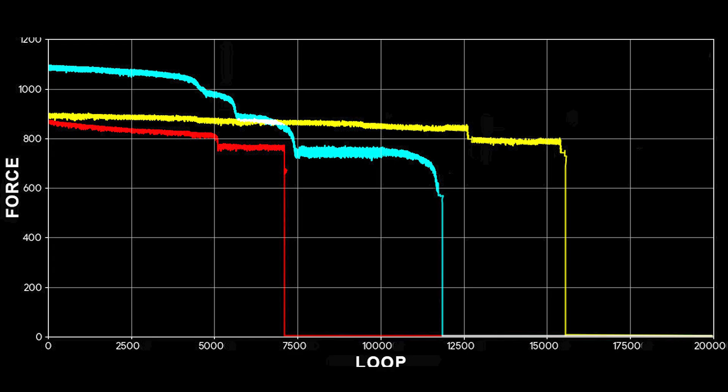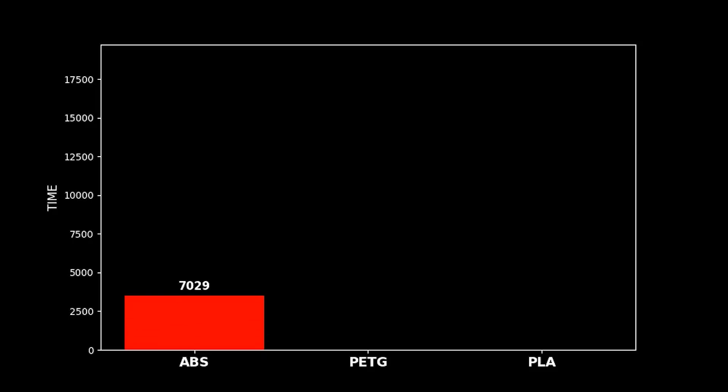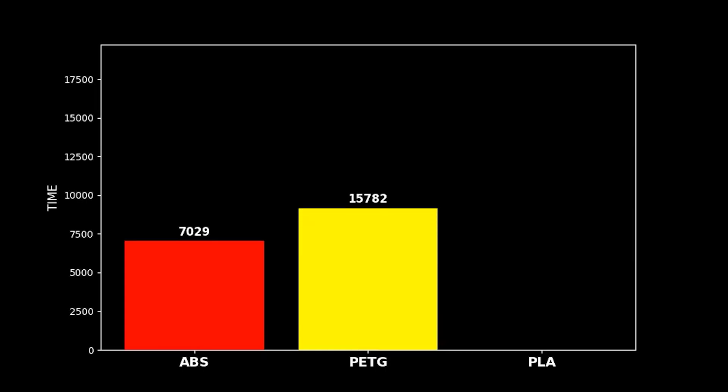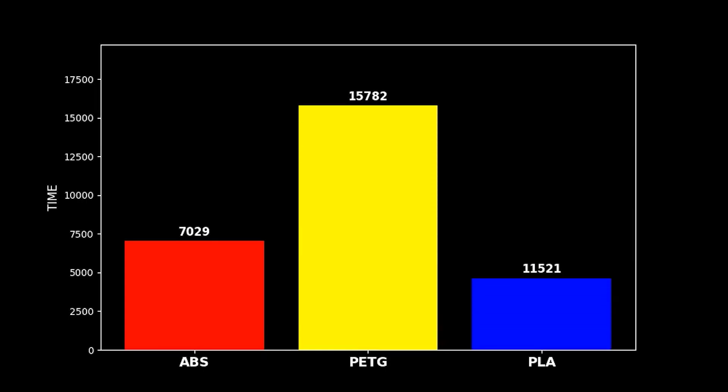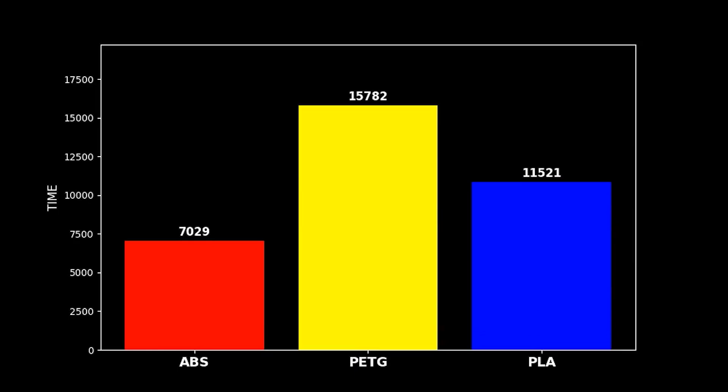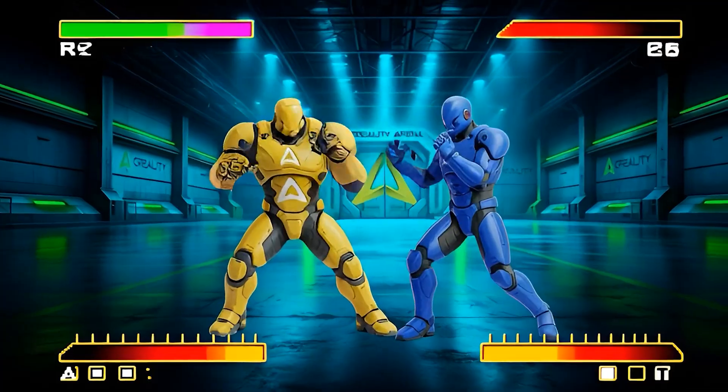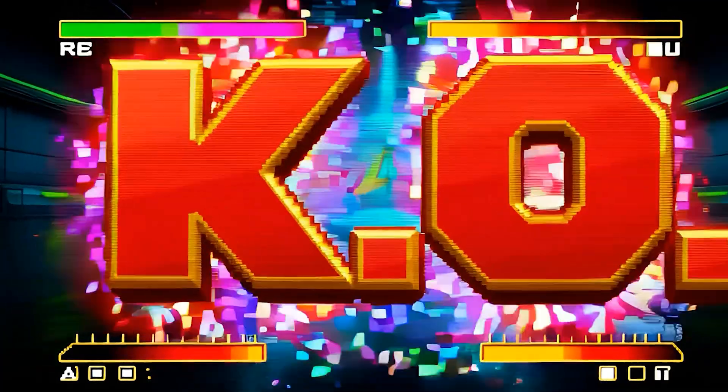And the final verdict. Who is the winner? PLA had the power, but it got tired and lost half of its strength. ABS held the line, but died early. But PETG, it kept its power. It fought for 15,000 loops. It refused to stop. The champion of endurance, the iron lung, PETG.